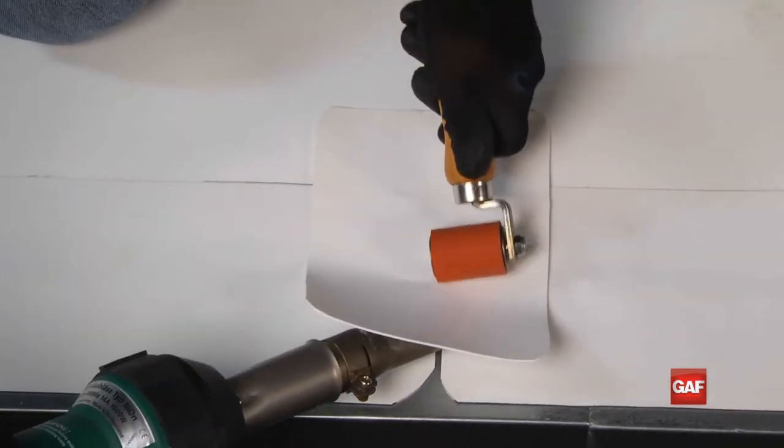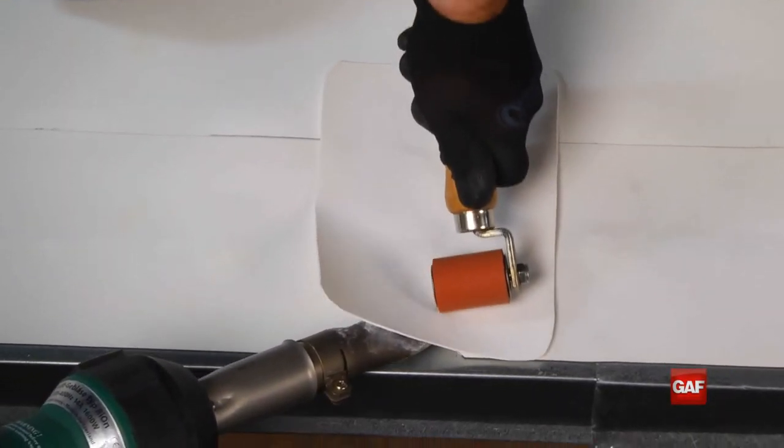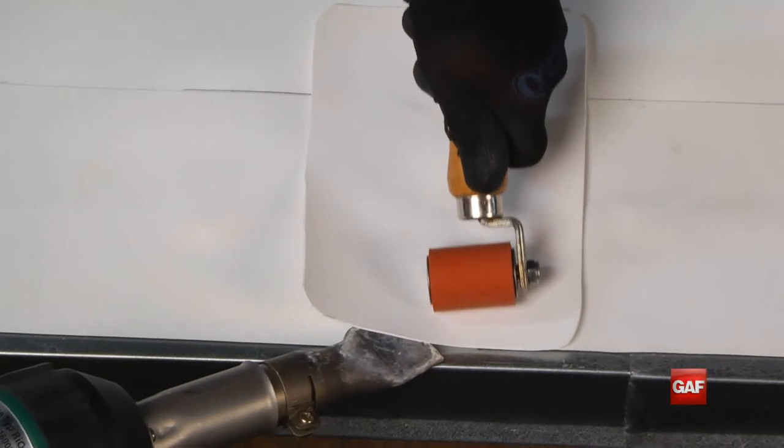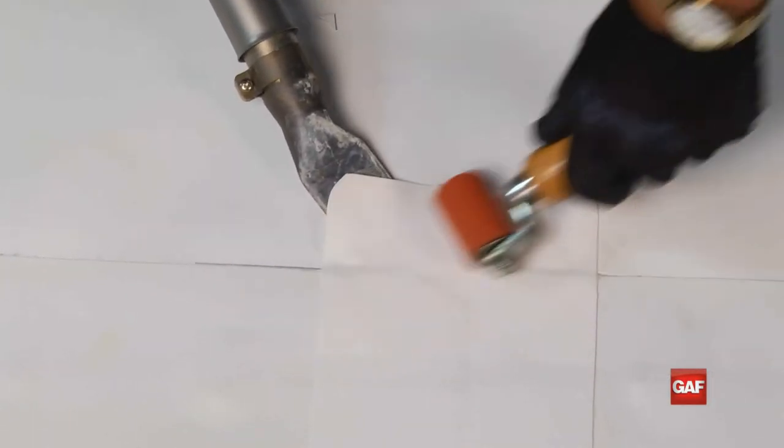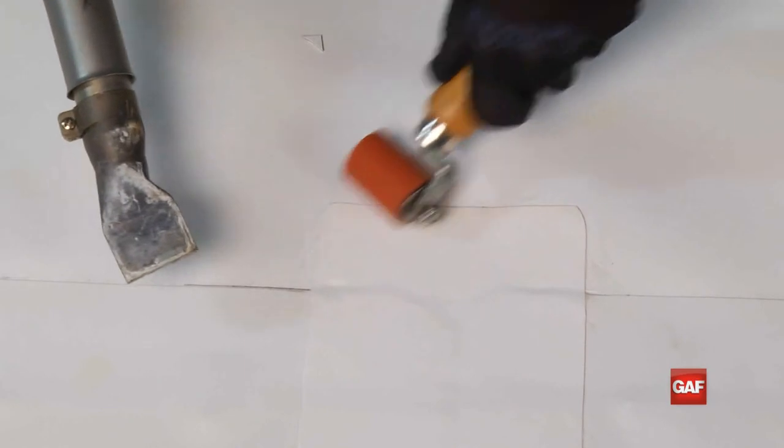Insert the heat gun underneath the patch and tilt the roller so the edge of the roller creases the weld tightly into the underlying seam. Then weld the rest of the patch out to the edge. Once the welds have cooled,